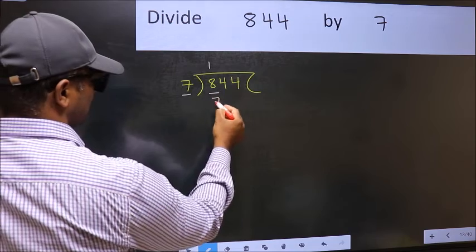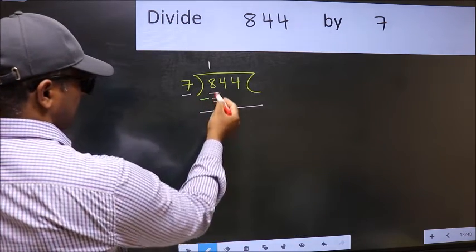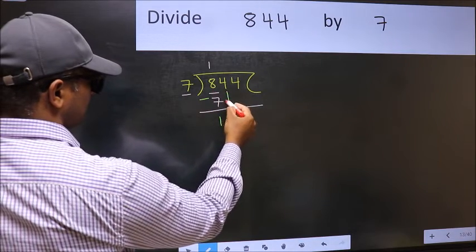Now you should subtract: 8 minus 7 is one. After this, bring down the beside number.